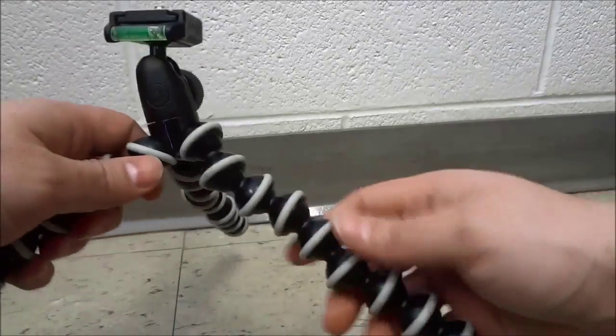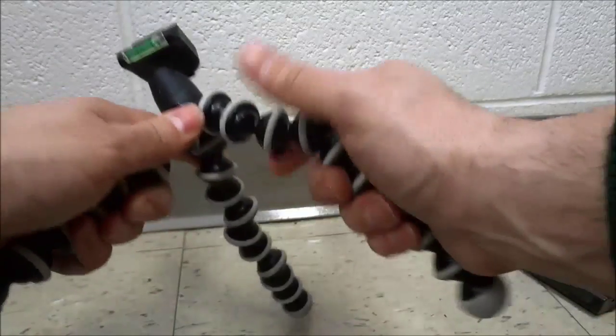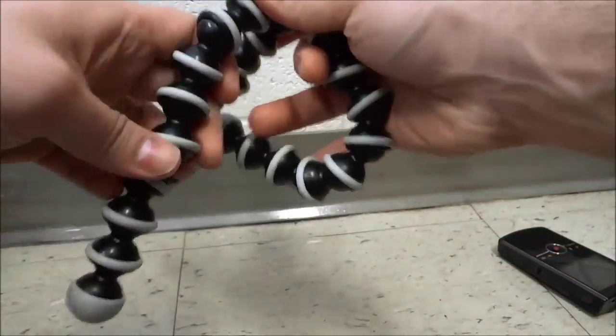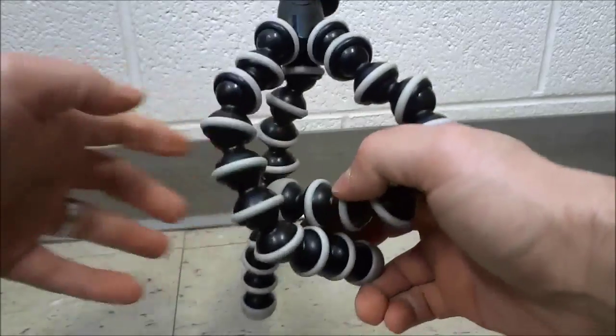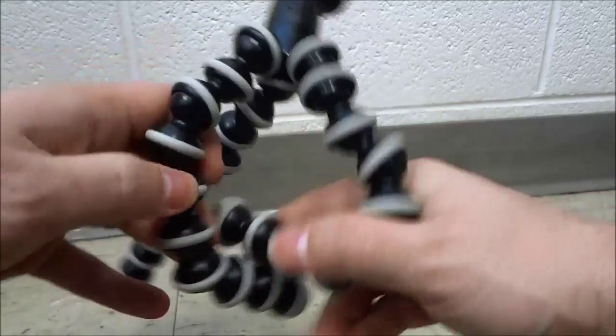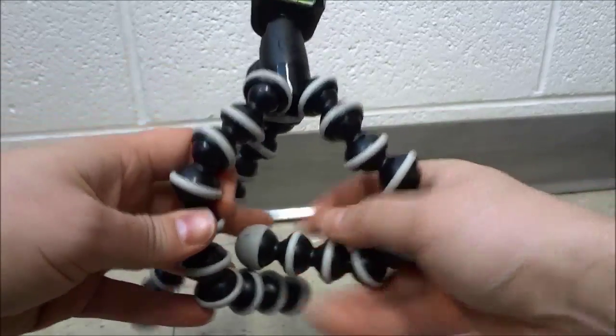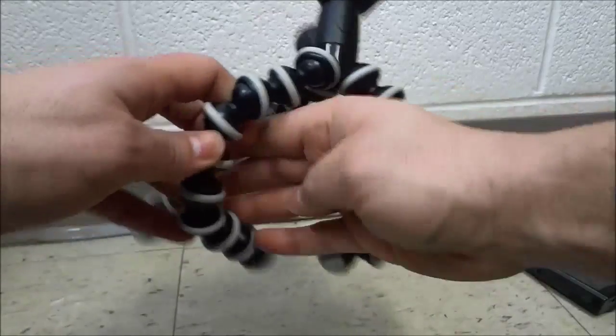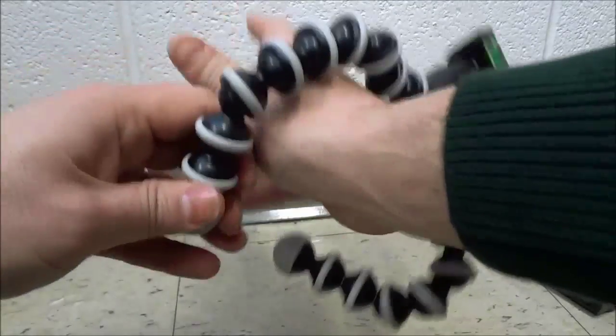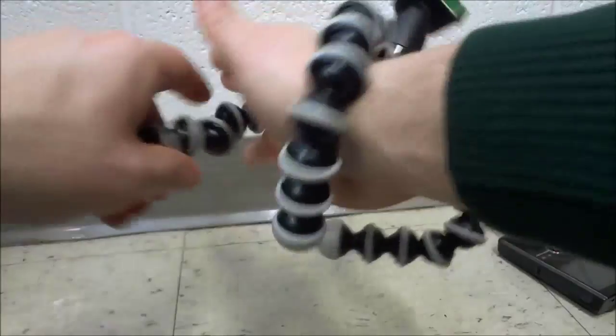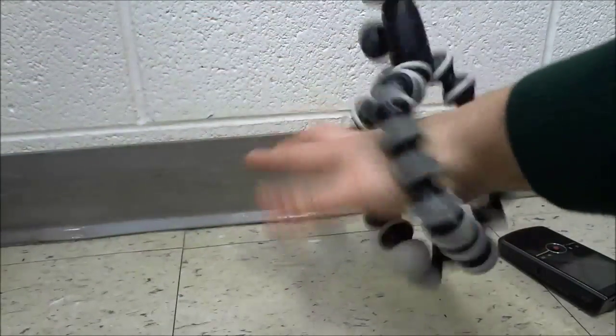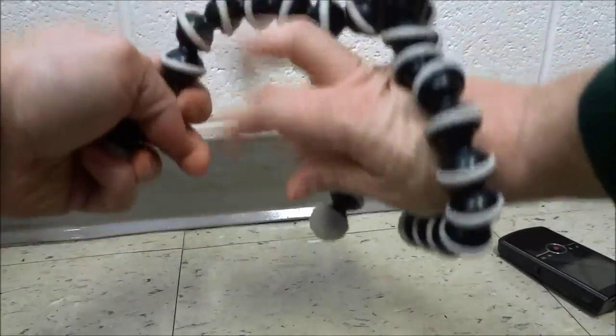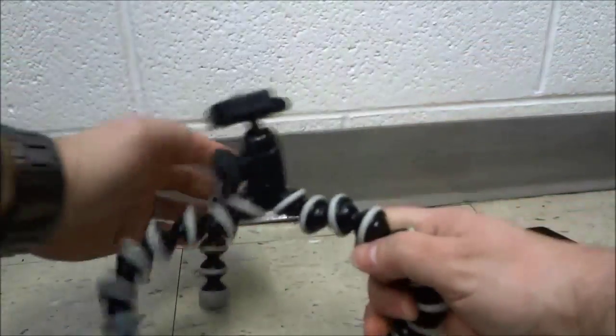You can also bend the tripod legs if you want to grip them around something. If I wanted to mount this on a tree branch, I could wrap these legs around the branch. If I wanted to mount it on my hand, I could wrap them around my hand just like that. As you can see, the tripod is now mounted on my hand. It's really an awesome tripod.